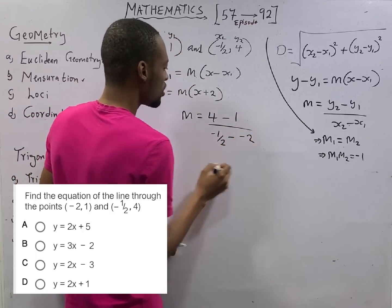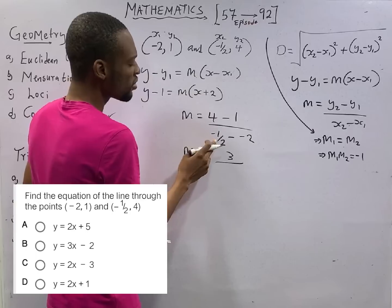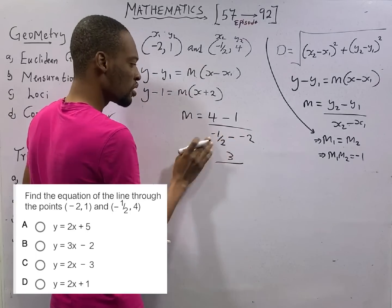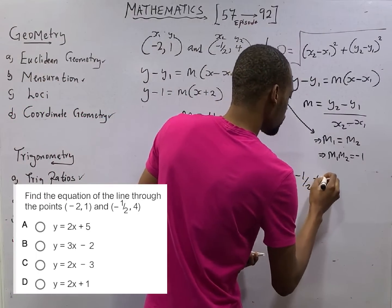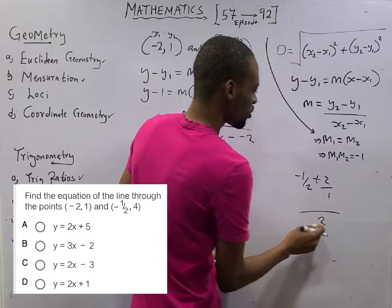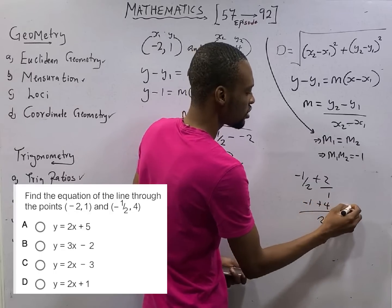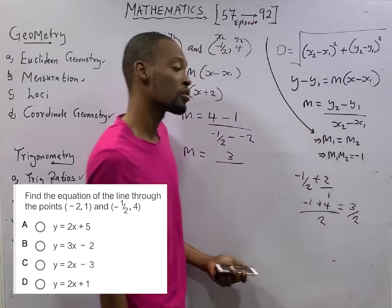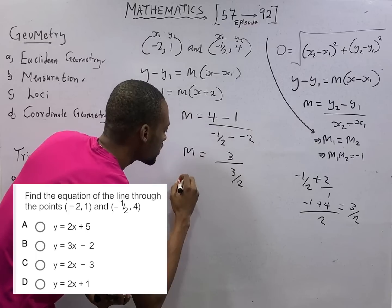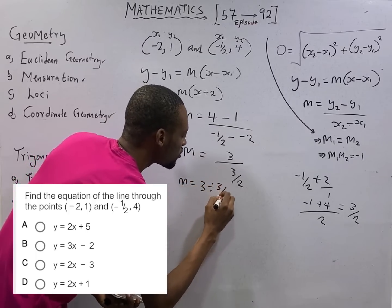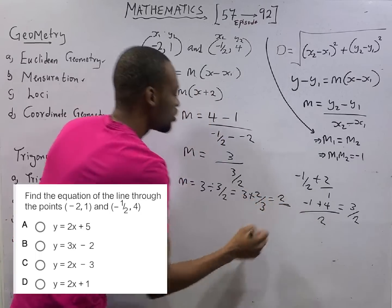M gradient is (y2 minus y1) over (x2 minus x1). And we got all that here. This is 3 over minus 1 minus 1 plus 2. LCM is 2. 2 divided by 2 is 1 times minus 1 plus 4. This is 3 over 3/2. Gradient m equals 3 divided by 3/2, and this is 3 times 2/3, which equals 2. The gradient is 2.